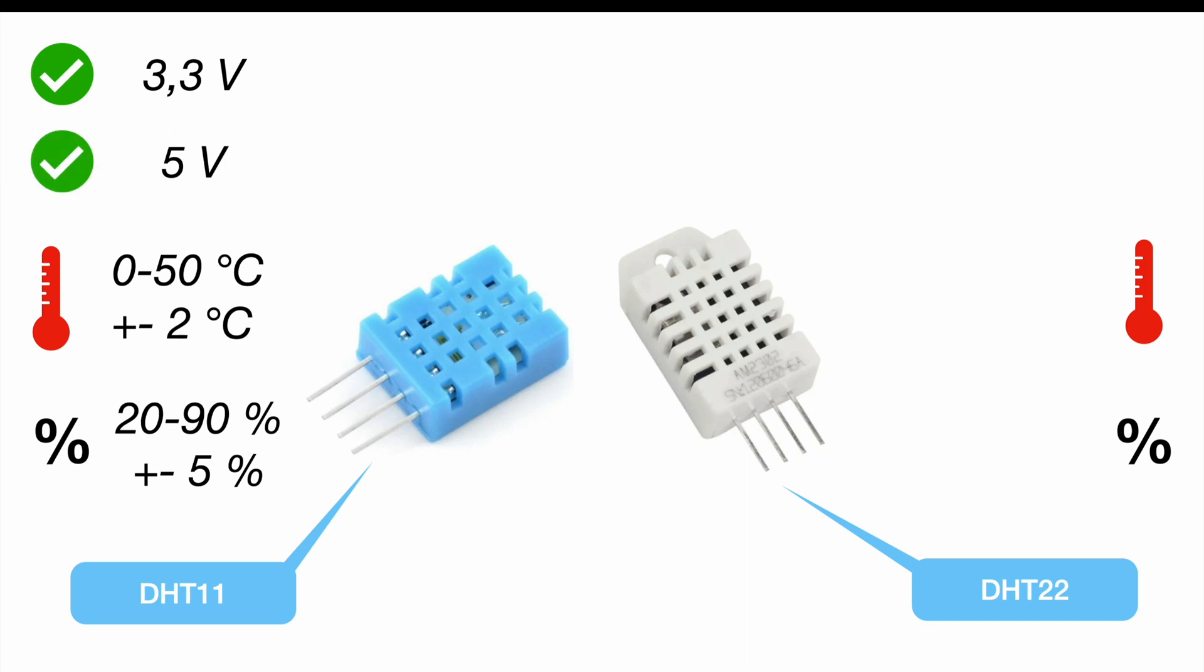So while the key performance of the DHT11 is kind of okay, the DHT22 is really like the next level or the higher quality or higher capability sensor. Starting with the humidity we can measure between zero and a hundred percent at an accuracy of plus minus two percent. So that's already way better than the DHT11.